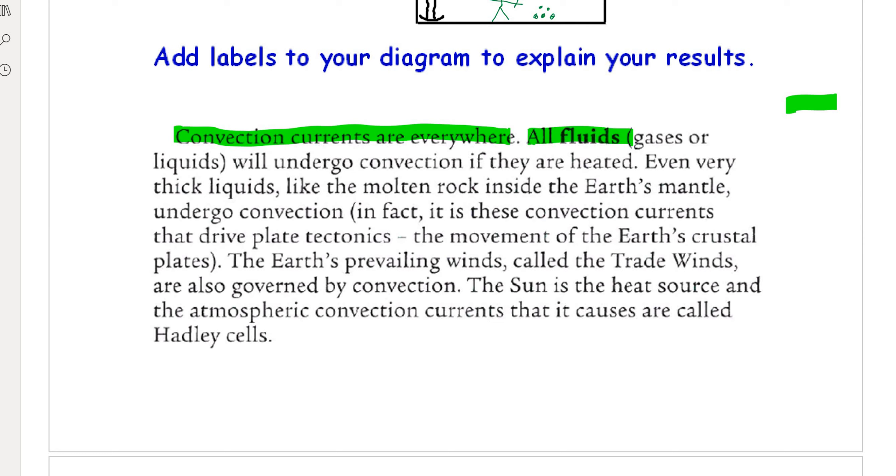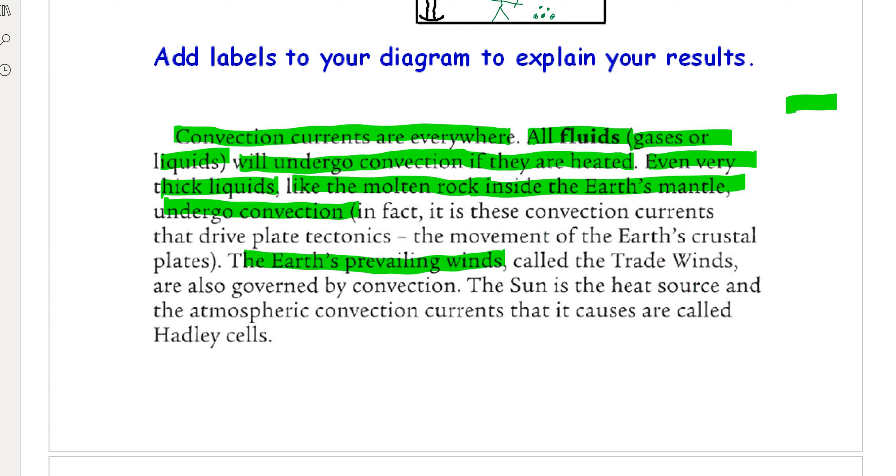All fluids—and these are gases or liquids—will undergo convection if they are heated. Even very thick liquids like molten rock within the Earth's mantle undergoes convection. The Earth's prevailing winds are also caused by convection. That is how wind is set up, in actual fact.